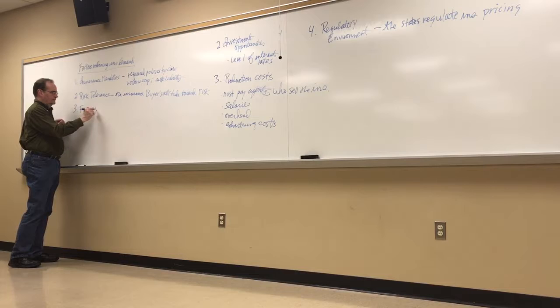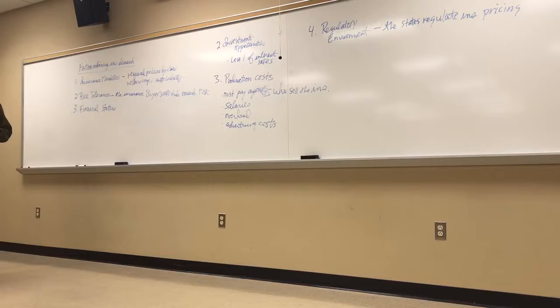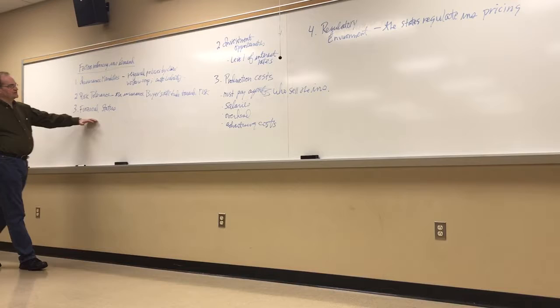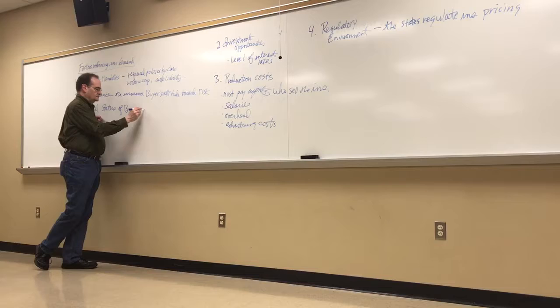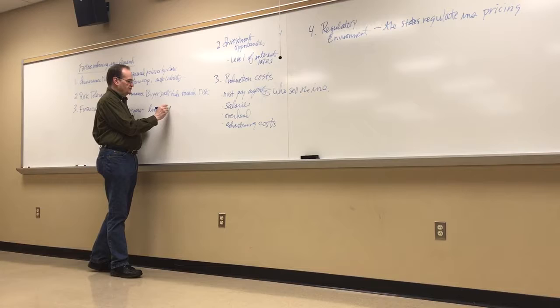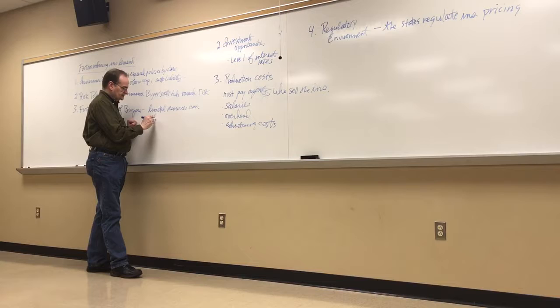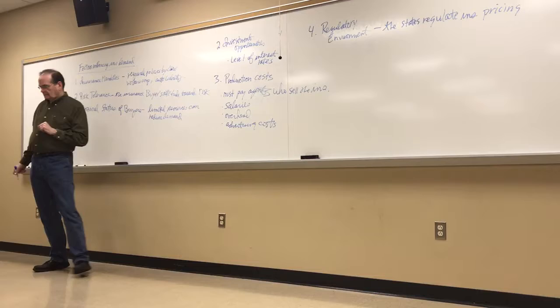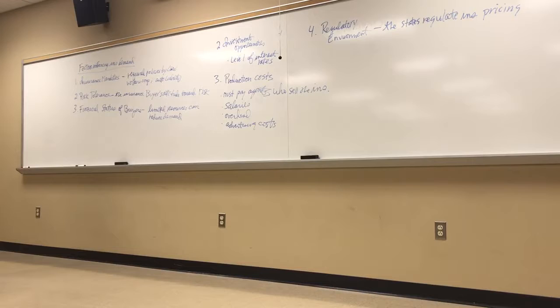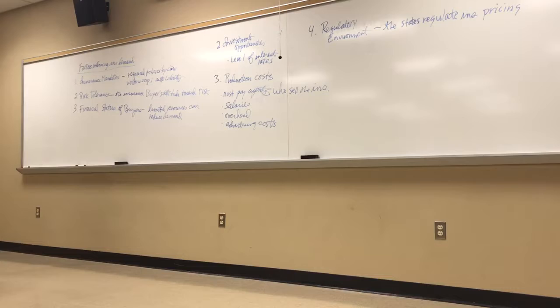Financial status. Individuals with limited resources may not buy insurance because it's a luxury to them. They can't afford it. So financial status of the buyers, limited resources can reduce demand. So if you try to sell life insurance to somebody who is poor, the annual premium is only $3,000 a year. It might be a great deal, but $3,000 a year is a lot of money if you're very poor.